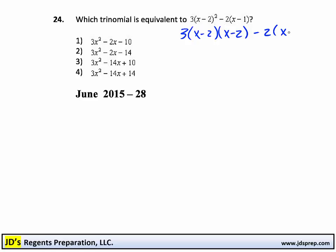Everything else gets rewritten. So when we double distribute, we have 3 times the quantity x squared minus 2x minus 2x, and then negative 2 times negative 2 is plus 4. While we're doing this, it might be helpful to also distribute into the second quantity. So negative 2 times x is negative 2x, and negative 2 times negative 1 is plus 2.